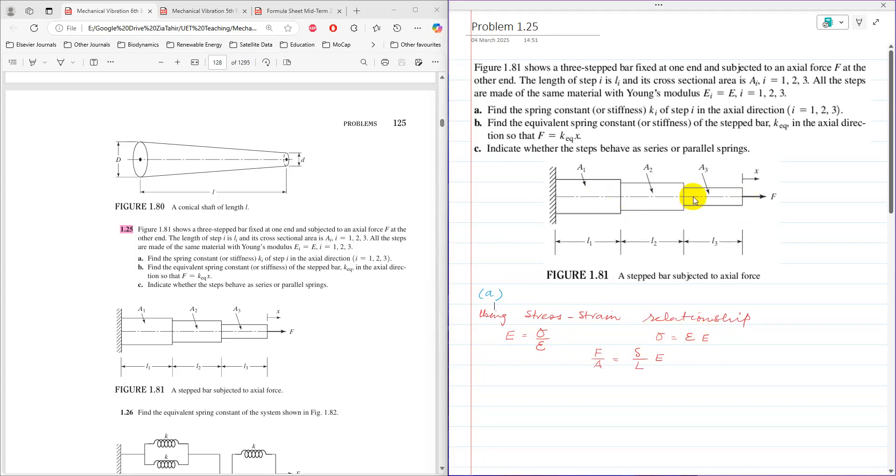Now stress in this case, because the force is F and under this force each step is going to elongate, then from here stress is equal to force over area of cross-section. And then strain is delta, which is elongation in each step, over L, which is the original length, times E.